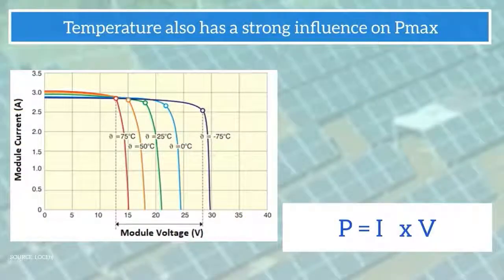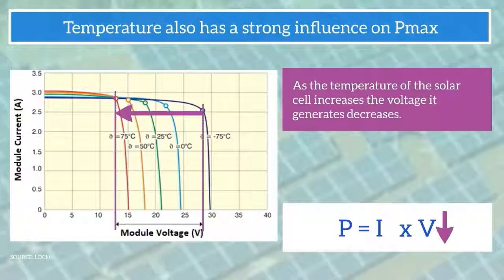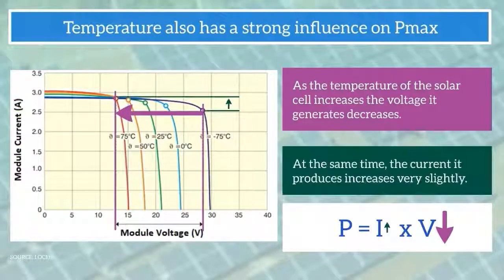Temperature also has a strong influence on Pmax. As the temperature of the solar cell increases, the voltage it generates decreases. At the same time, the current it produces increases very slightly.